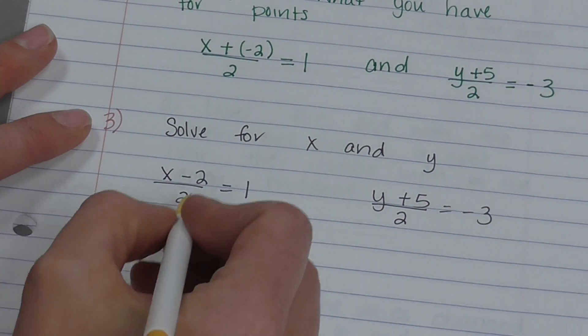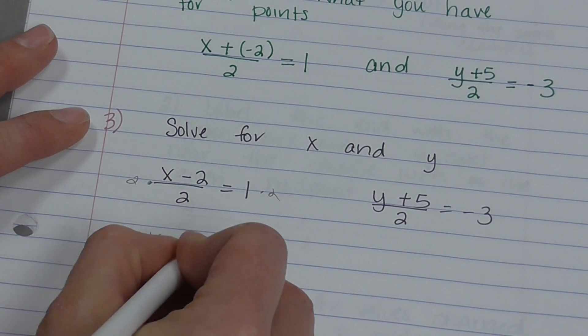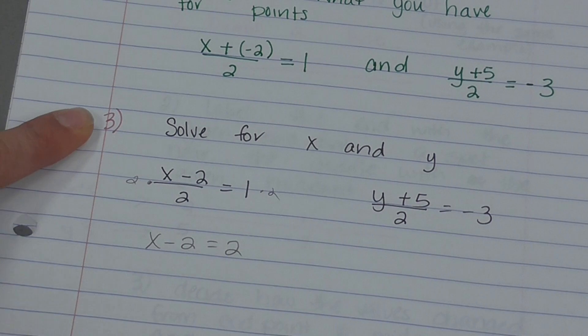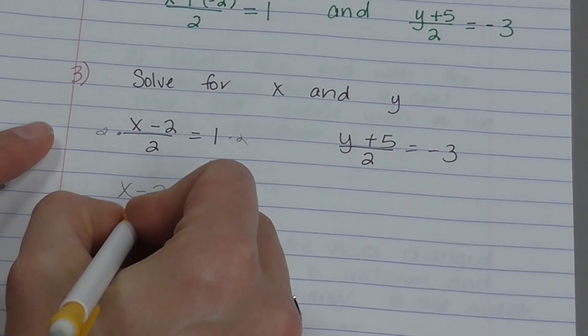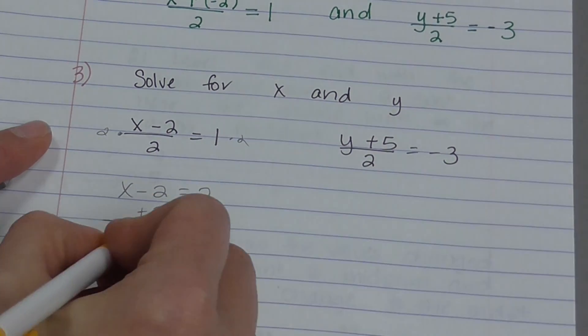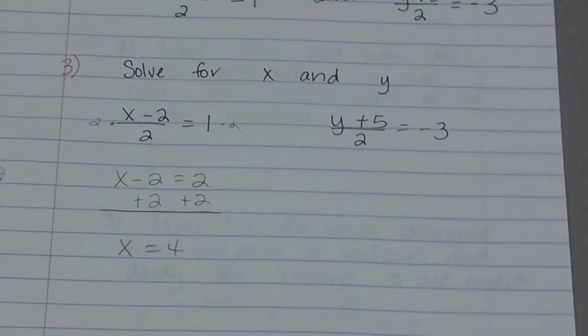So in order to solve for x, I'm going to multiply both sides by 2. So I get x minus 2 equals 2. Then I'm going to add 2 to both sides. And I get x equals 4. So there's the x value of my endpoint.